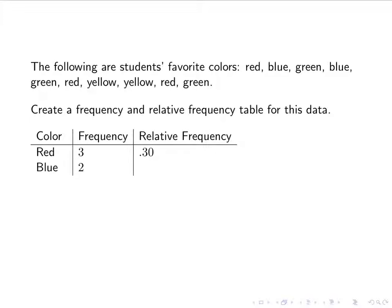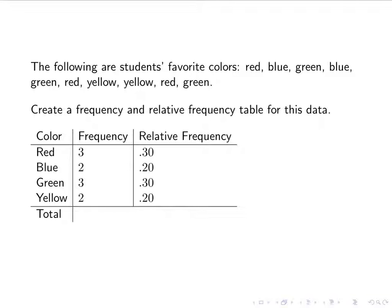For blue, there were two people — a relative frequency of 0.20. If we did have cumulative relative frequency, it would tell us that 50% chose red or blue, but that doesn't really make much sense for categorical data. For green, there were three people, so again a relative frequency of 0.30. For yellow, there were two, so 0.20. In total, if I add them up, I should get 10 in the frequency column and 1 in the relative frequency column.